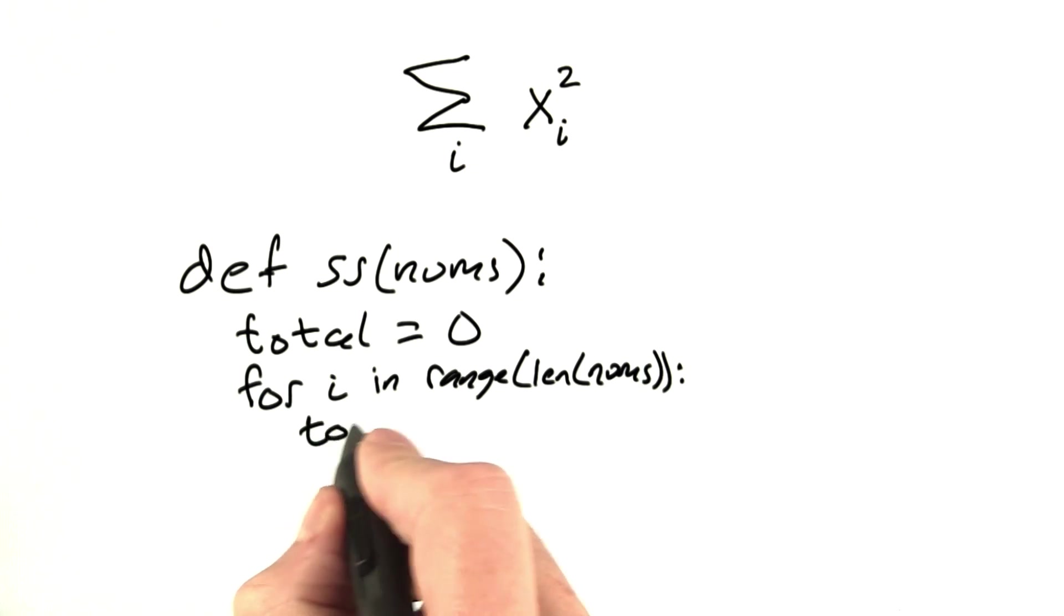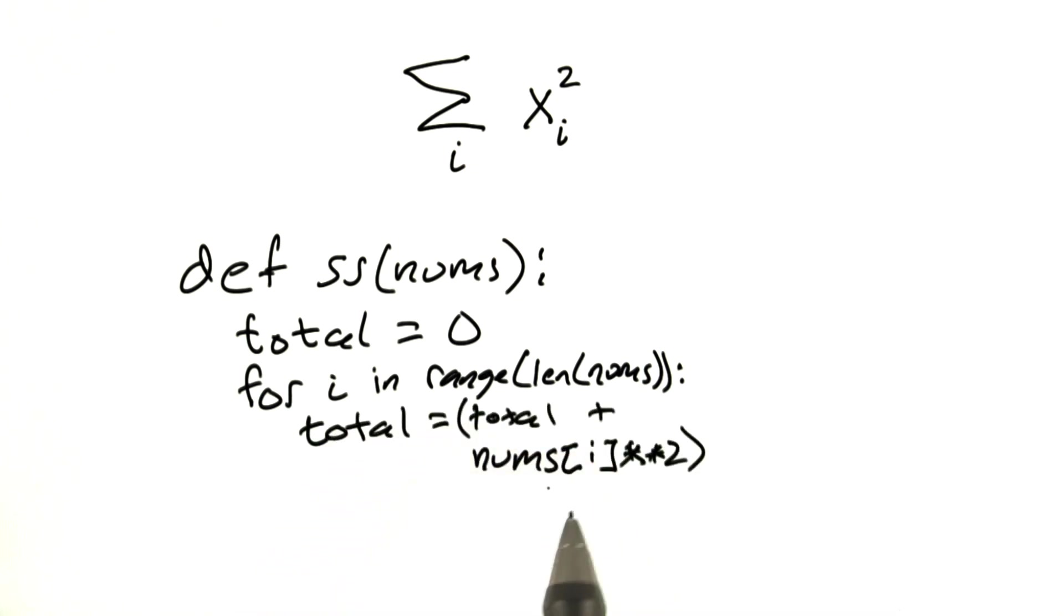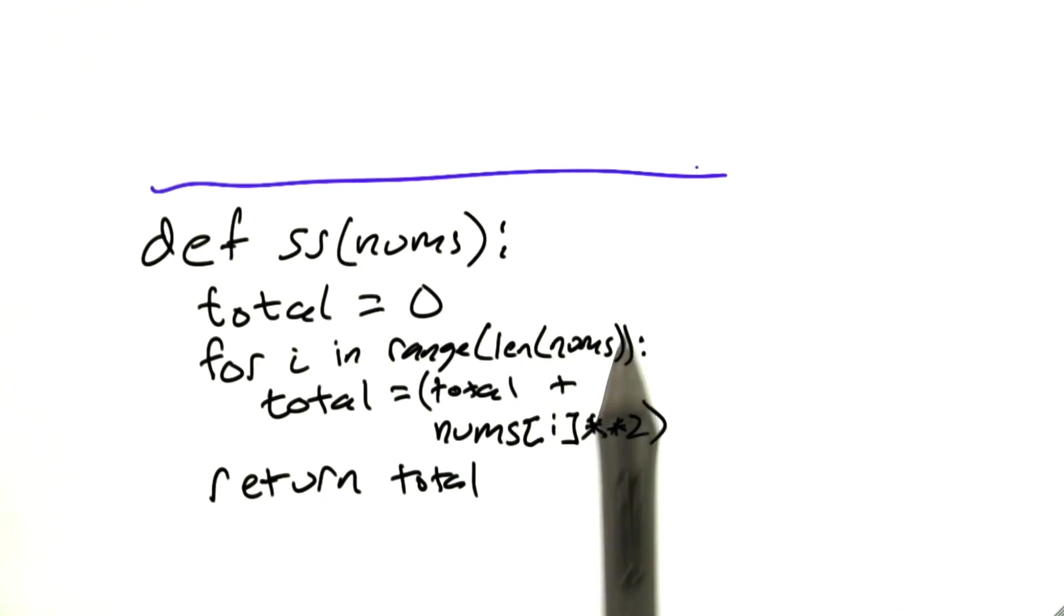And for each one, we'll increment the total by the square of the number. And then when we're done, we'll return the total. So that's a perfectly good solution. No problems with that whatsoever. If you're able to come up with that, you've done your job. But then after you come up with your solution, I'll show you mine.